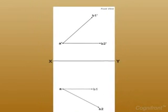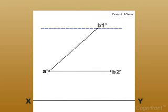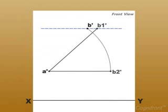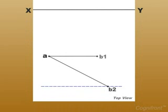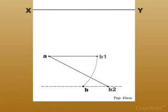To rotate the line A'B2' to the final position, draw the locus of the end point B in the front and top views. The locus of point B' is a line passing through B1' and parallel to XY. With A' as center and A'B2' as radius, draw an arc cutting the locus line of B1' at B'. The line A'B' is the required front view of the given line. Similarly, with A as center and AB1 as radius, draw an arc cutting the locus line of B2 at B. The line AB will be the top view of the given line.